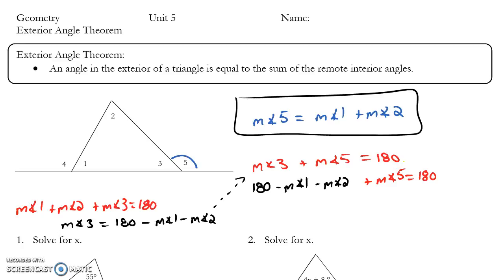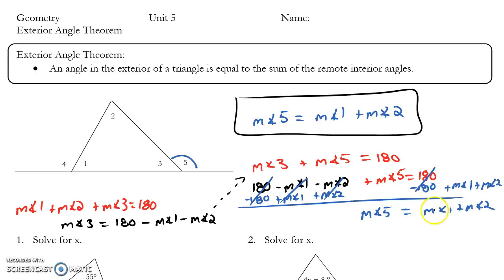Now solve for the measure of angle 5. If I do my algebra right here and subtract 180 from both sides, it goes away, that goes away. Add angle 1 to both sides and add angle 2 to both sides, that goes away, that goes away. I'm left with measure of angle 5 equals measure of angle 1 plus measure of angle 2.